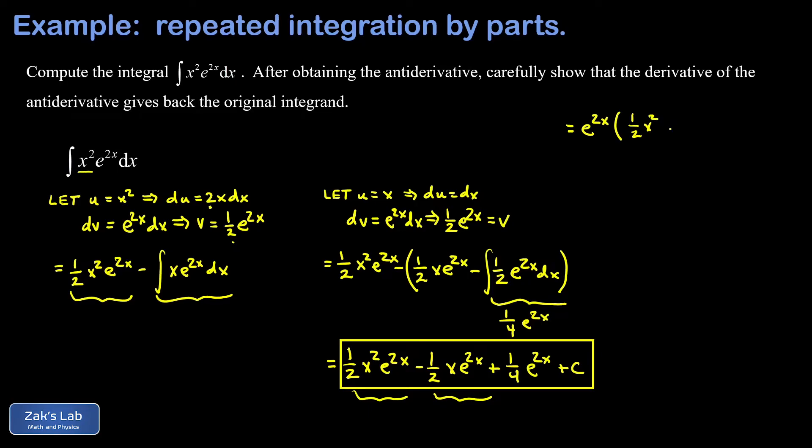I end up with e to the 2x times the quantity one half x squared minus one half x plus one fourth. Of course, there's a plus c that doesn't matter because when we differentiate that we get zero. So what's the derivative of this? Now we have to use the product rule only once because I have this function e to the 2x out in front and this polynomial function in the parentheses.